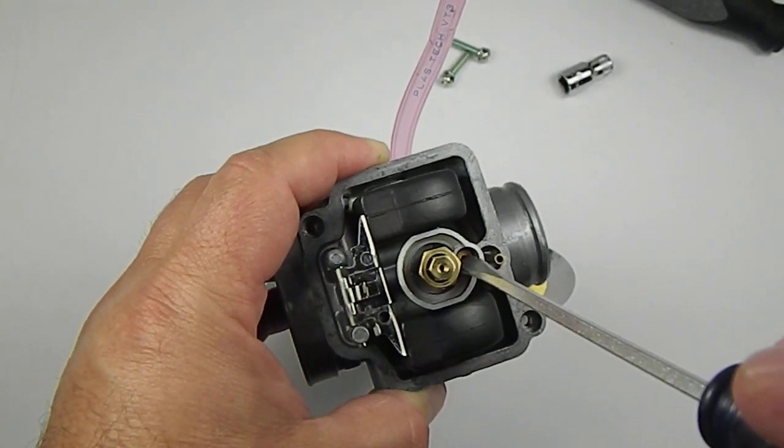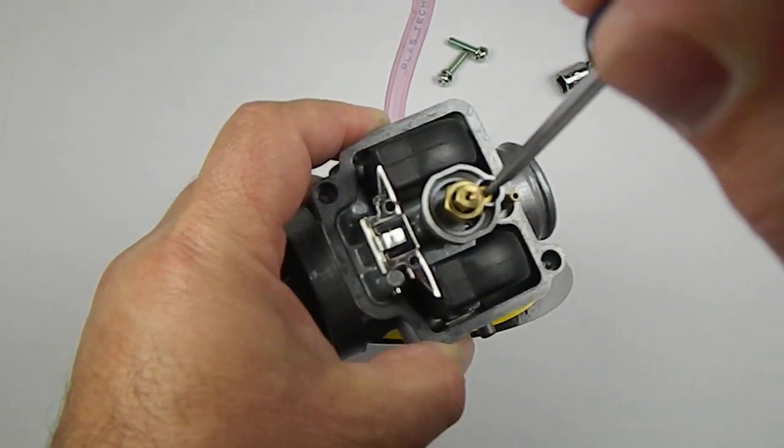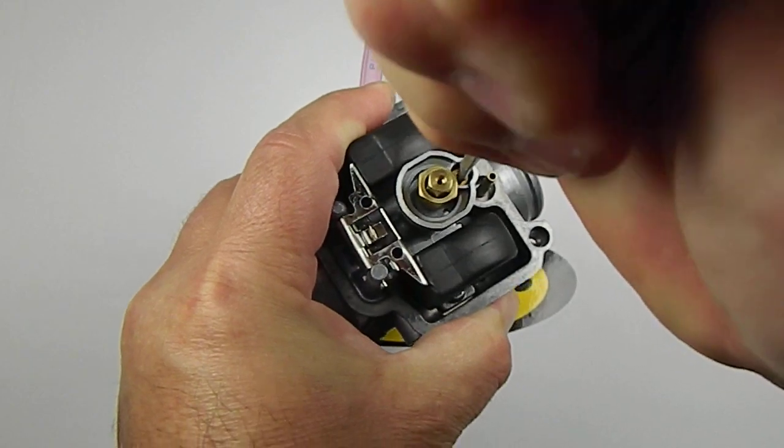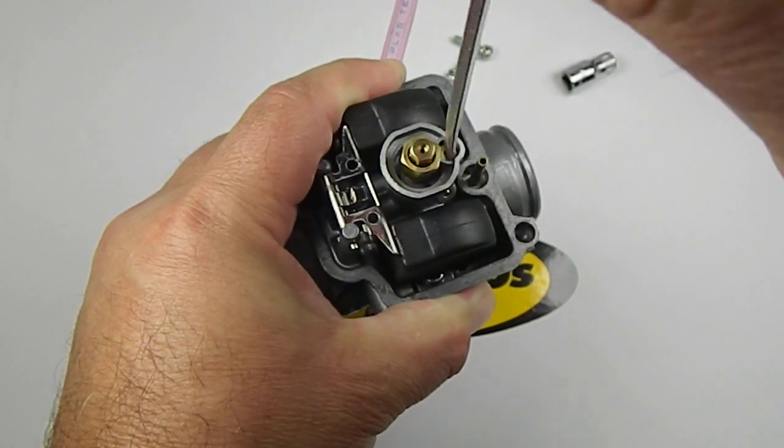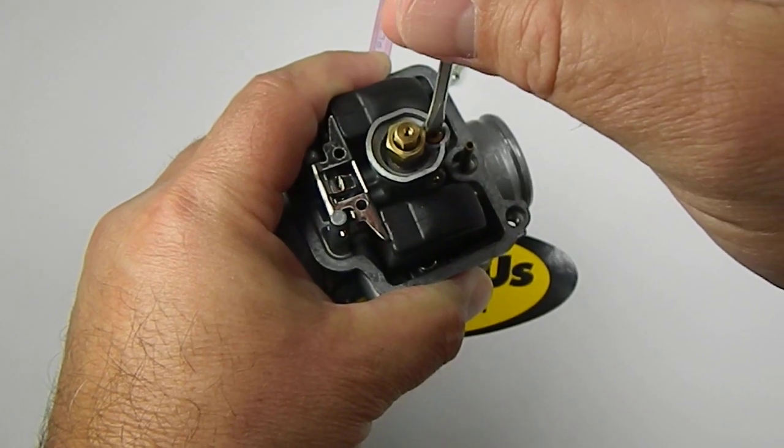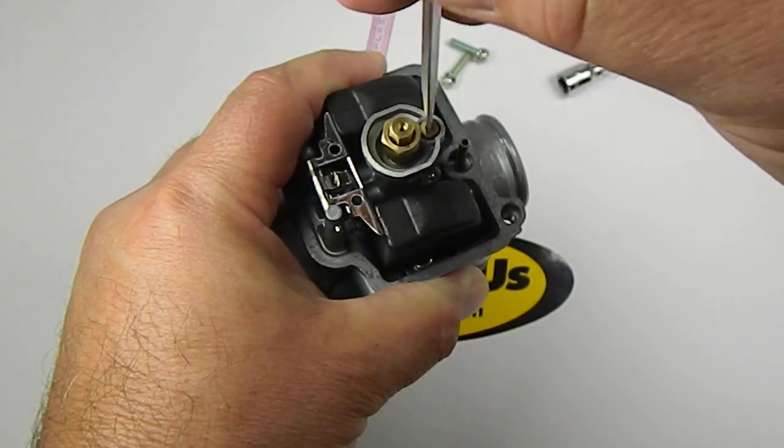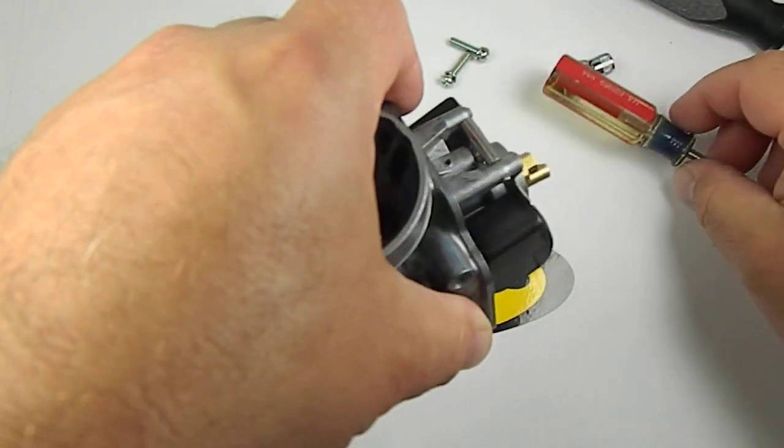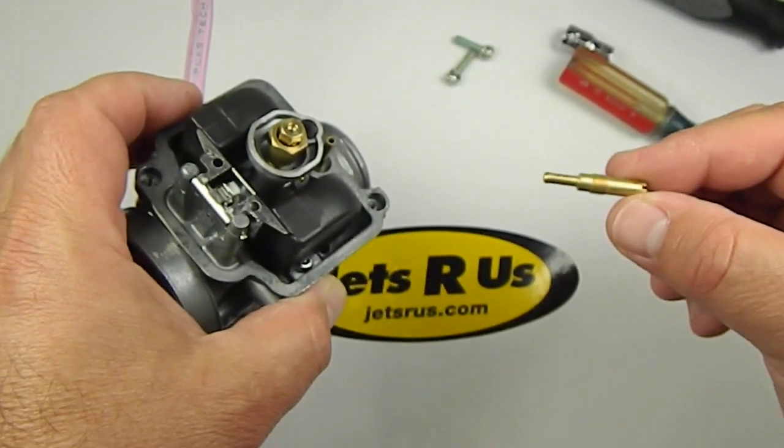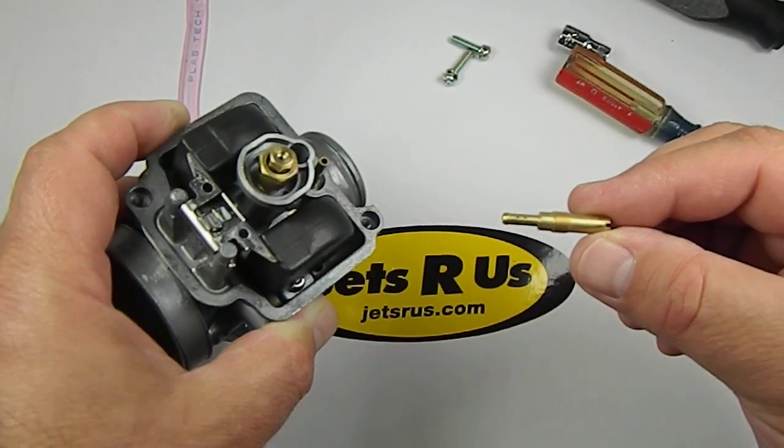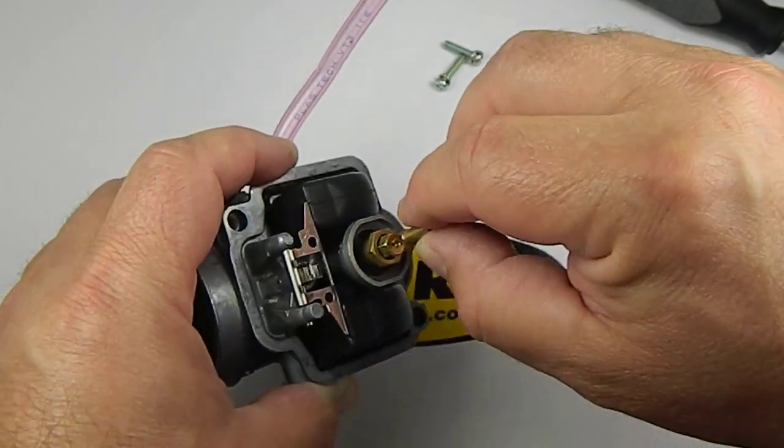Your pilot jet or your slow jet is right there. Different carburetors will have them in slightly different locations, but for the most part all carburetors are very similar. And there's your pilot jet or slow jet, and you just replace it with the size you want to use and reinstall.